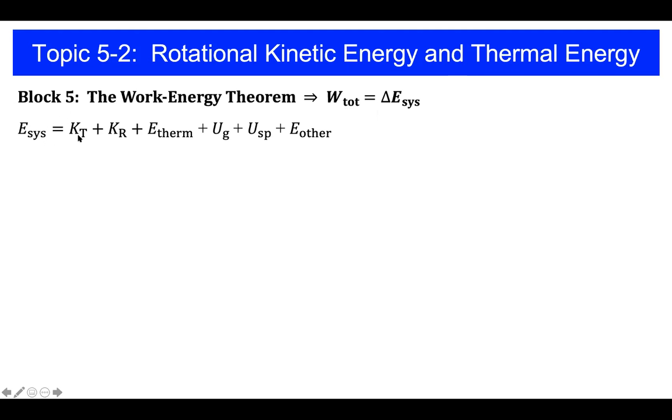For us in Physics 100, the energy of a system can consist of six different terms. The first, translational kinetic energy, K sub T. The second, rotational kinetic energy, K sub R. The third, thermal energy, E therm.